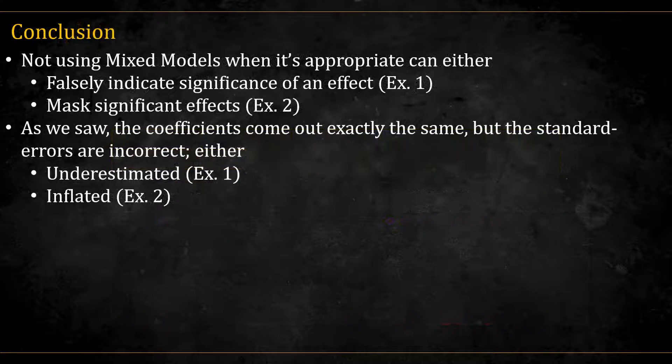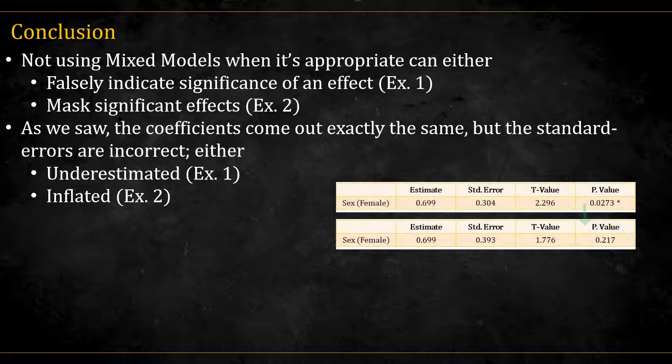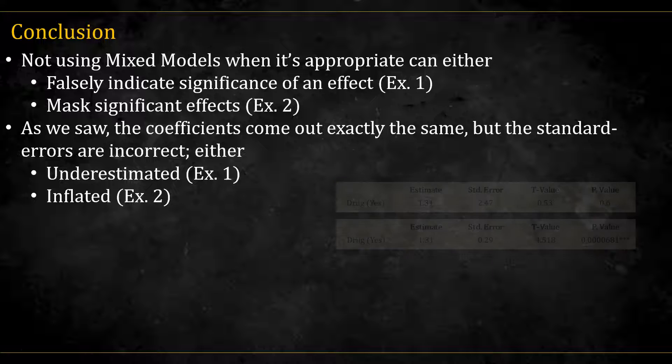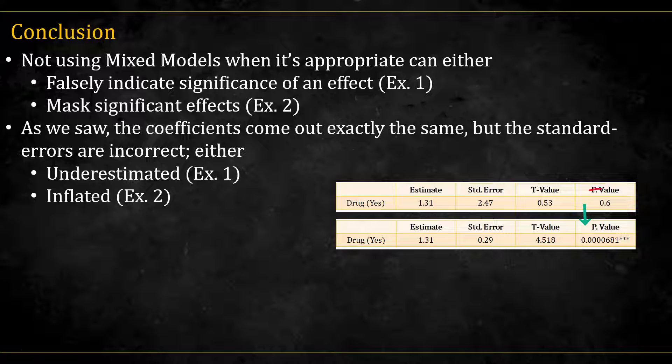So, in conclusion, not using mixed models when it's appropriate can either falsely indicate significance of an effect, as we saw in example 1, where the linear model misled us to believe the effect is significant when in fact it wasn't, or mask significant effects, as we saw in example 2, where the linear model misled us to believe that an effect is insignificant when in fact it was significant.